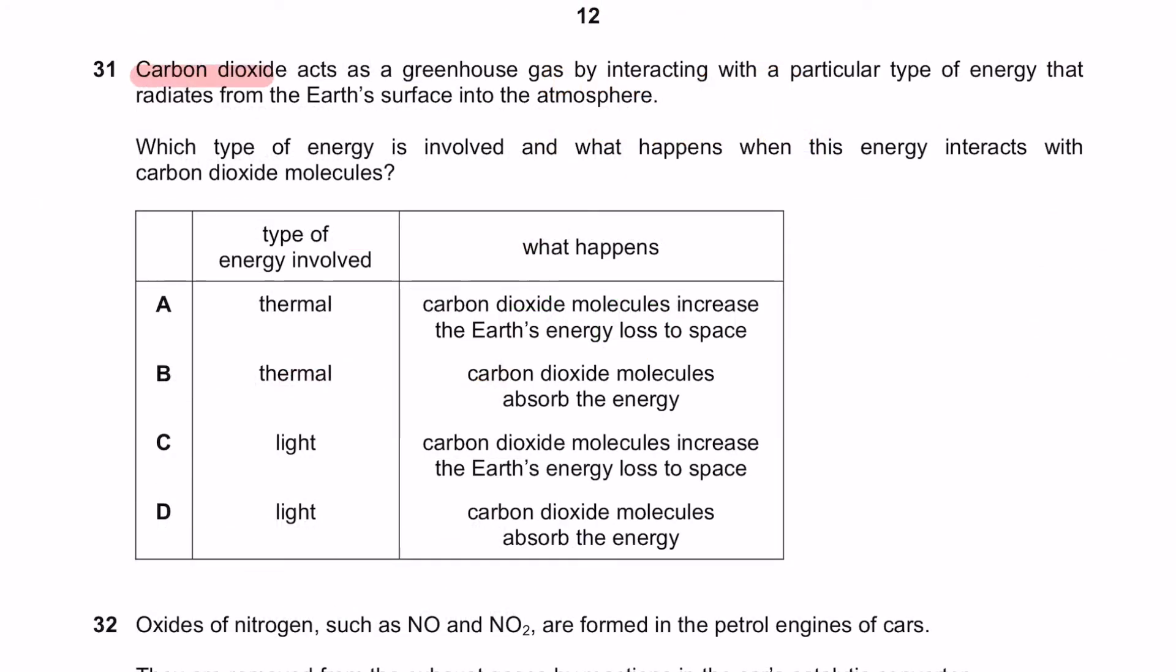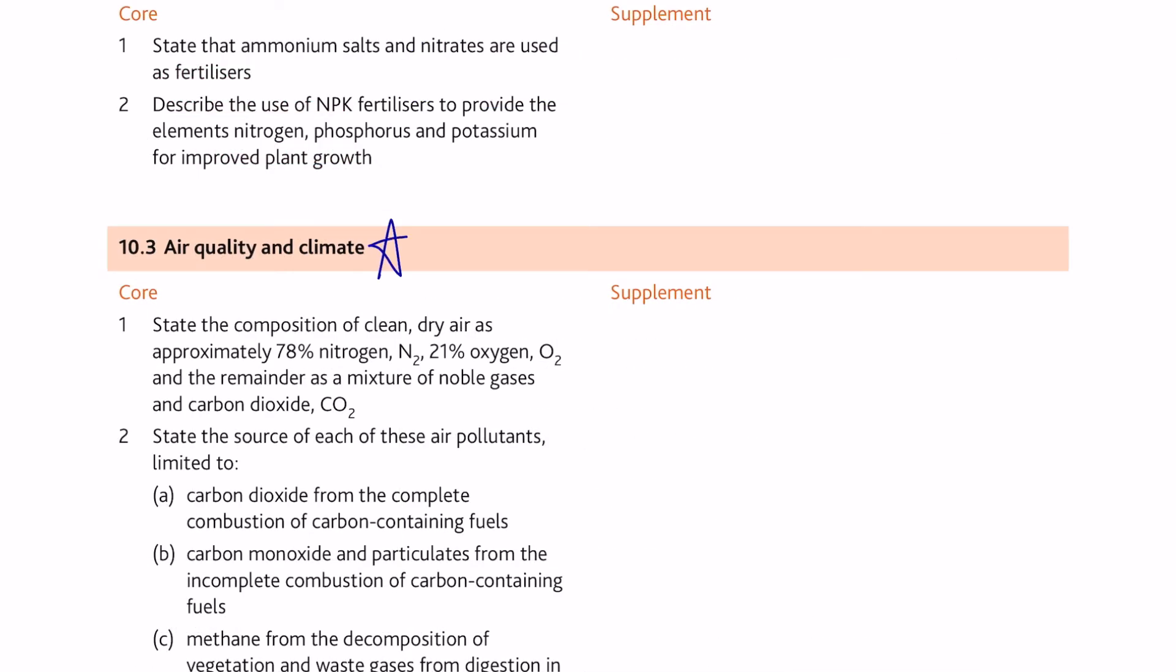Question 31. Carbon dioxide acts as a greenhouse gas by interacting with a particular type of energy that radiates from the earth's surface into the atmosphere. Which type of energy is involved and what happens when this energy interacts with the carbon dioxide molecules? So we are discussing greenhouse gas.